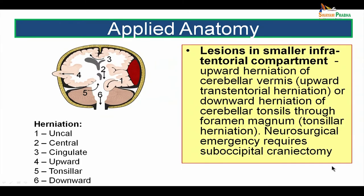Lesions in the smaller infratentorial compartment could lead to upward herniation of the cerebellar vermis — upward transtentorial herniation — or downward herniation of the cerebellar tonsils through the foramen magnum, called tonsillar herniation. These are neurosurgical emergencies requiring suboccipital craniotomy. The picture shows different types of herniations: uncal herniation, central herniation, cingulate herniation, upward herniation, tonsillar herniation, and downward herniation.